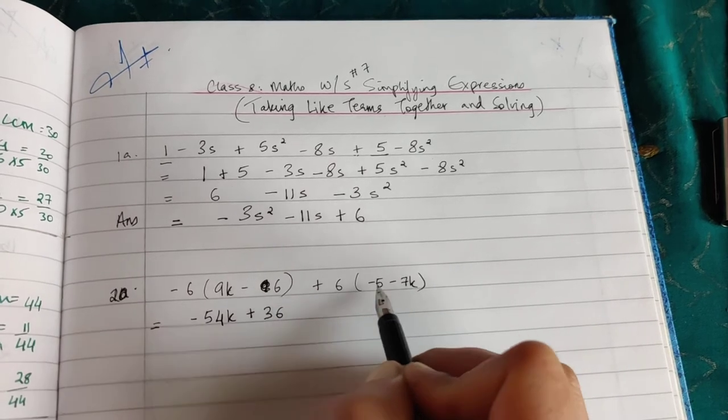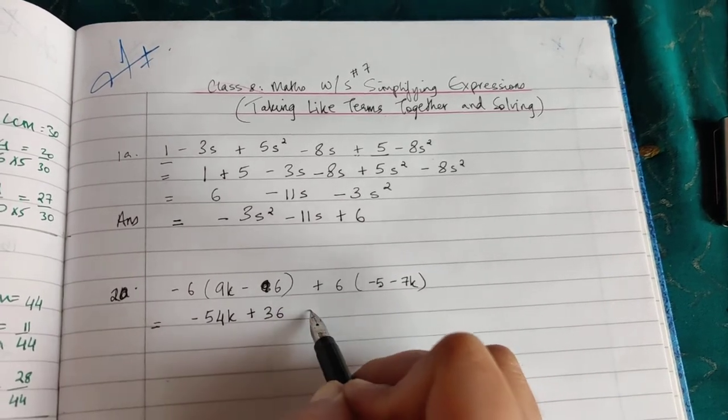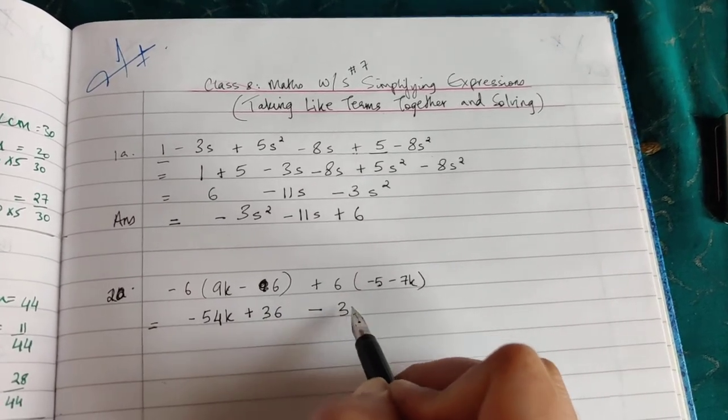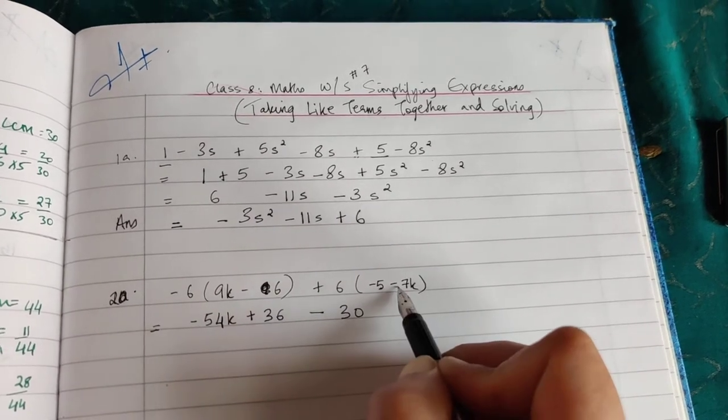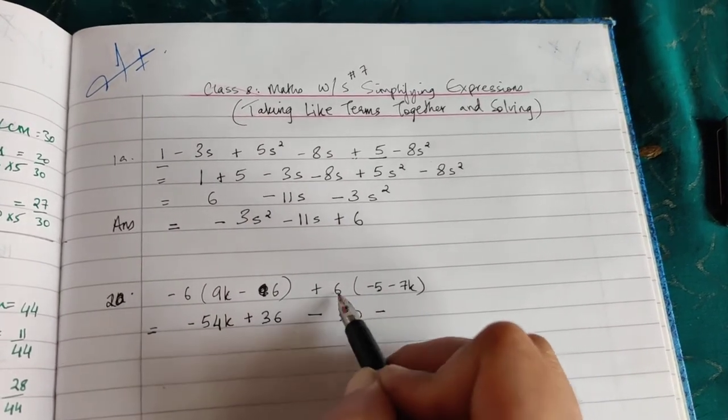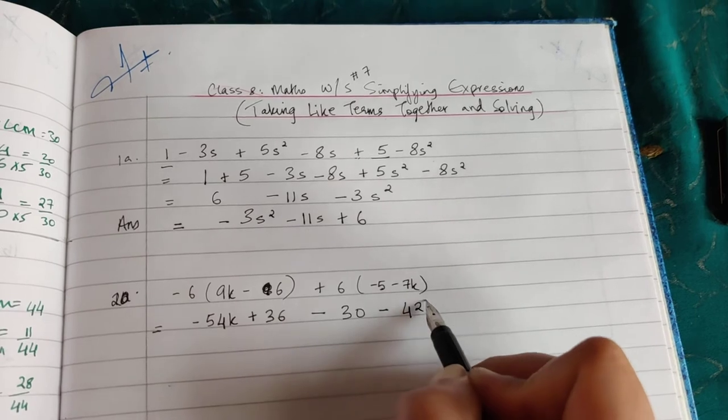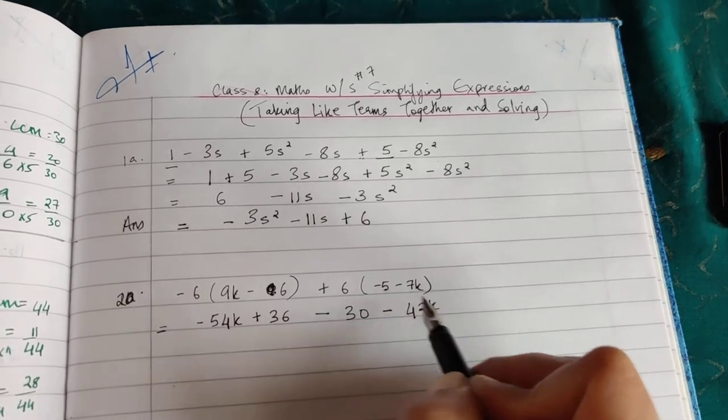This is plus into minus. Plus into minus is always minus. 6 × 5 is 30, again plus into minus is minus. 6 × 7 is 42k. So whenever there is a bracket, you multiply the term outside with each term inside.